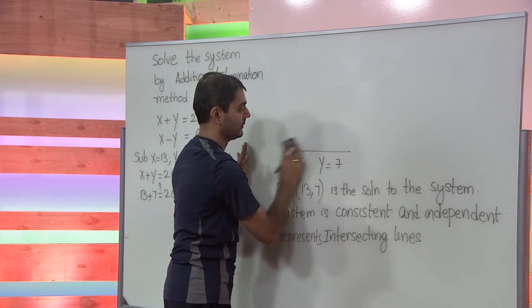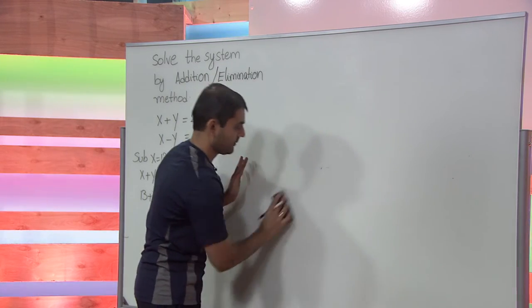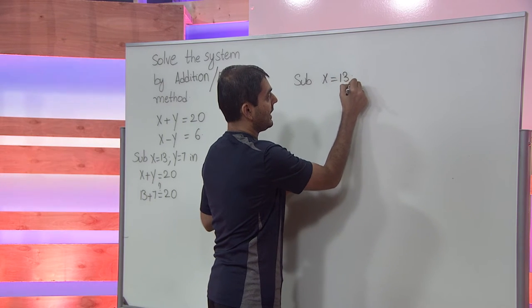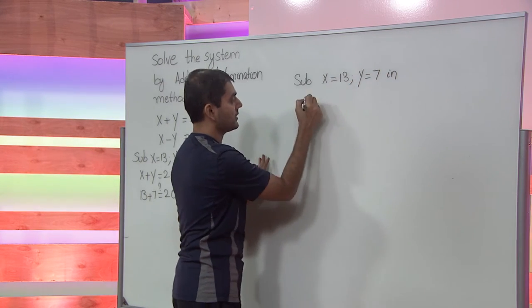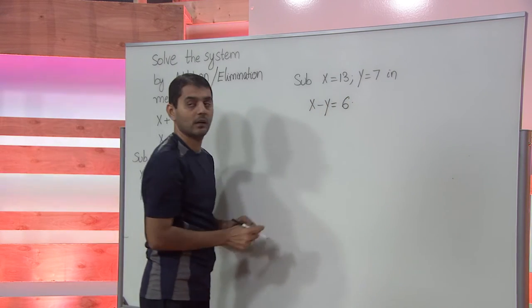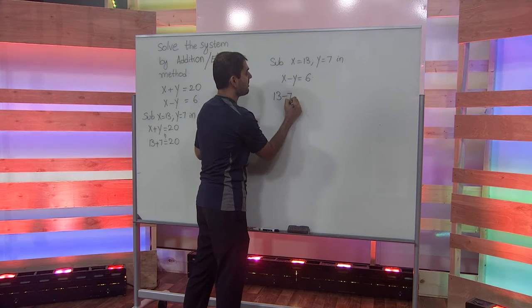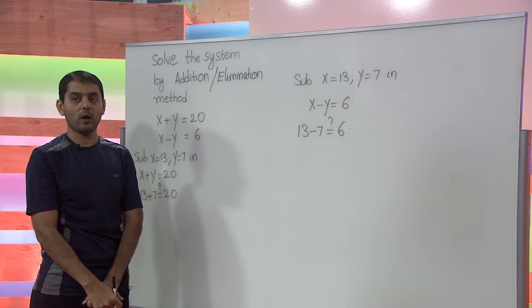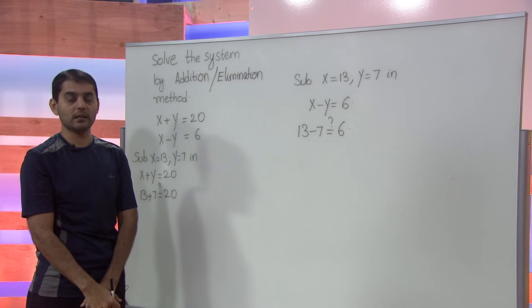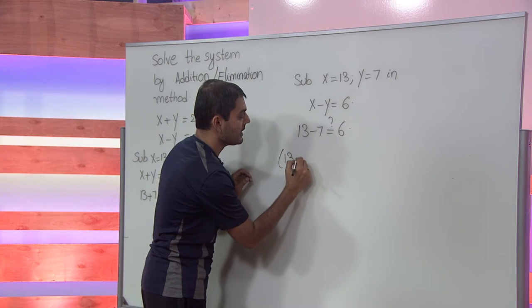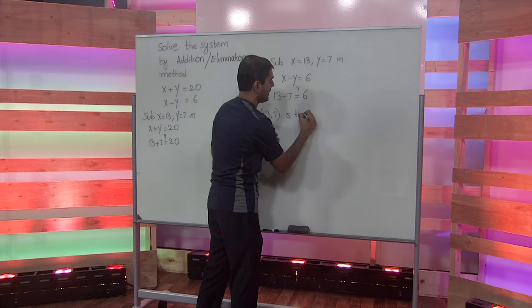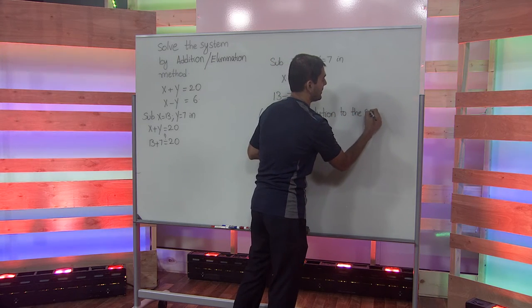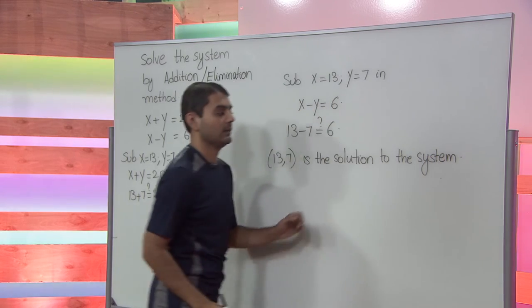Similarly, substituting x equals 13 and y equals 7 into the second equation x minus y equals 6, this equation also reduces to an identity.